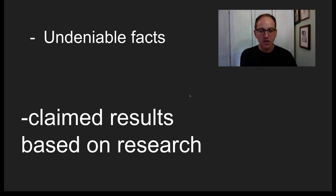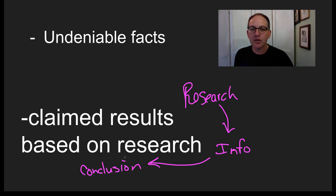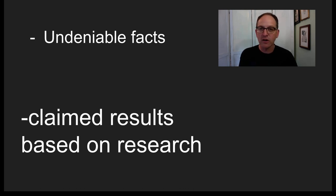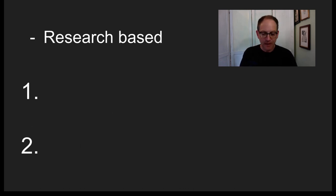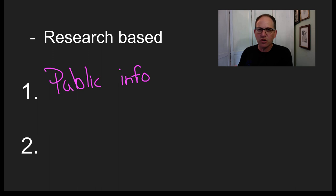Now, claimed results are things based on research. Research is done, information is gathered, and from that you come up with a conclusion. You hear this all the time in the news about this person's research and that person's research — those are claimed results based on research. Those are the ones I would like to spend most of our time applying critical thinking to. Research-based information has to be public — put out there for everyone to read and look at. It can't be something closed off, believed only by a certain group.